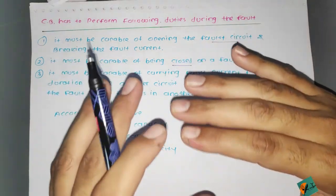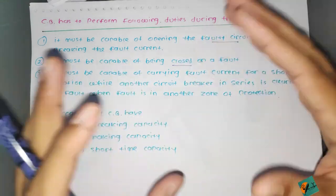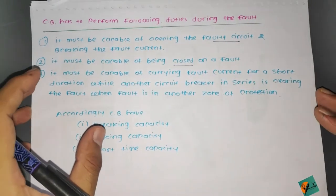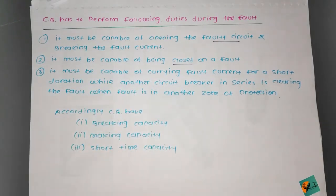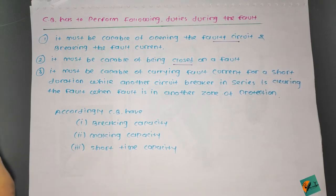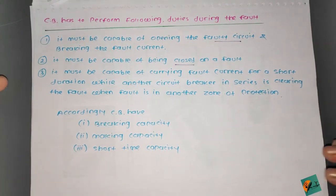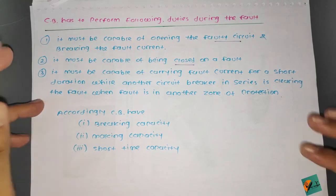One circuit breaker should wait while another circuit breaker in a different zone handles the fault. Even though the fault current affects the first circuit breaker, it should not operate immediately — it should only operate after a time delay. If circuit breaker one fails to operate, the second one will come into operation. Accordingly, circuit breakers have breaking capacity, making capacity, and short time capacity.